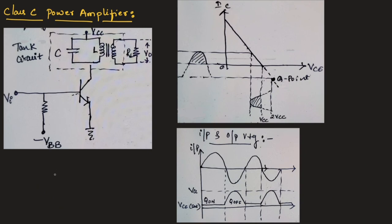The frequency of oscillation of class C power amplifier can be given as Fr equals 1 divided by 2π√LC. This is the expression for frequency of oscillation of class C power amplifier.